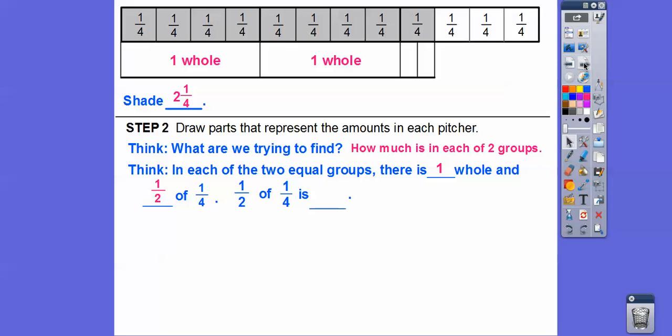So one half of one fourth, well, what's half of a fourth? That's one eighth right there. All right? So two and a fourth divided by two, here's two and a fourth, and then if we take it and cut it in half, each one gets a whole quart plus an eighth of a quart.